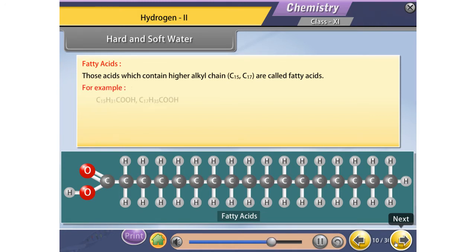Fatty acids: Those acids which contain higher alkyl chain are called fatty acids. For example, C15H31COOH, C17H35COOH. Hard water forms precipitate on reacting with soap.